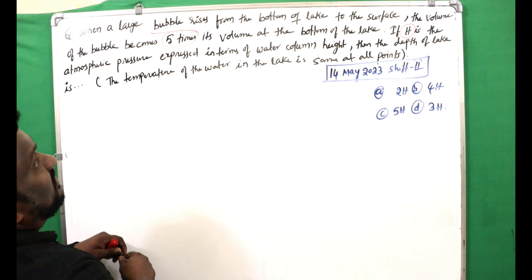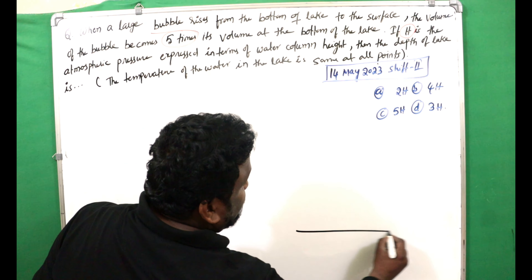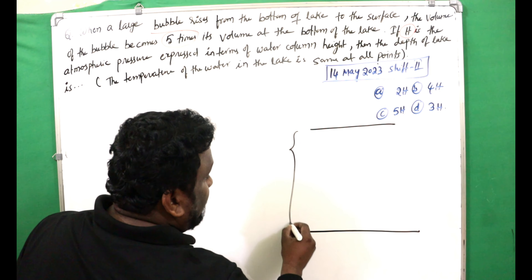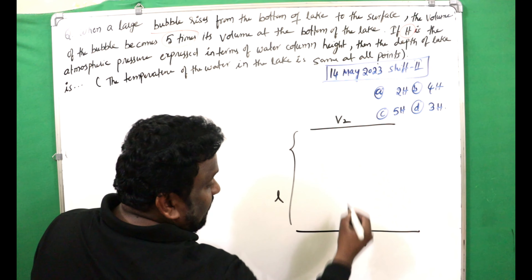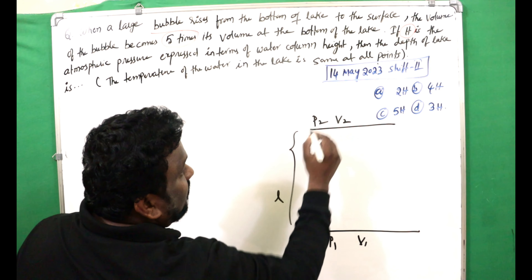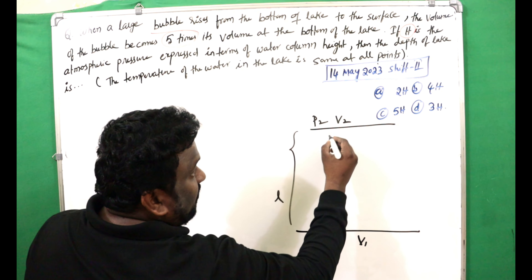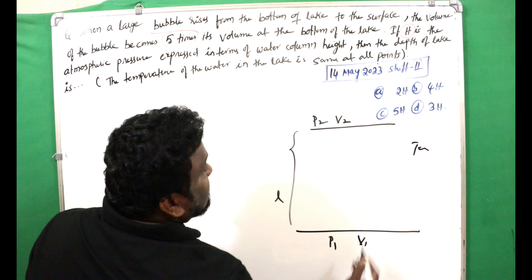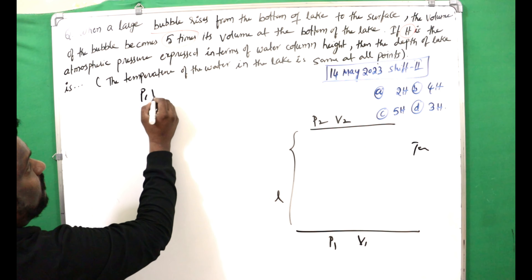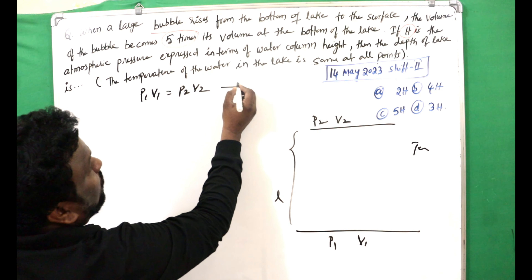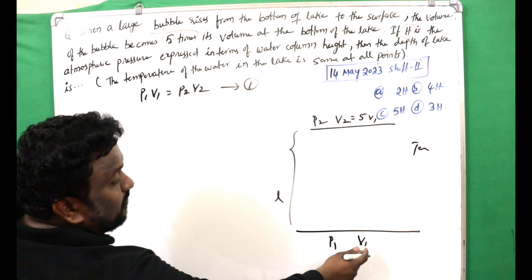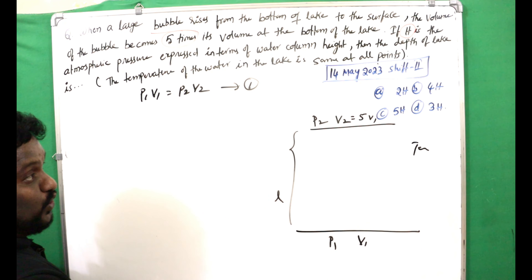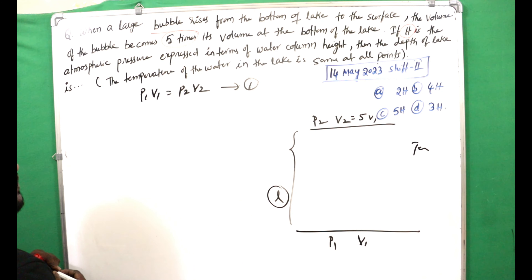Here we have a lake and the depth of the lake is L. So P1V1 = P2V2 — that is condition number one. And V2 is equal to 5V1, meaning the volume increases five times. Now we will find out the value of L.